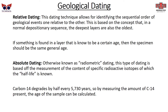There is also what we would call absolute dating, sometimes called radiometric dating — a type of dating based on the measurement of the content of specific radioactive isotopes, of which the half-life is one. Carbon-14 degrades by about half every 5,730 years, and it's very consistent, so by measuring the amount of carbon-14 present, the age of the sample can be calculated.